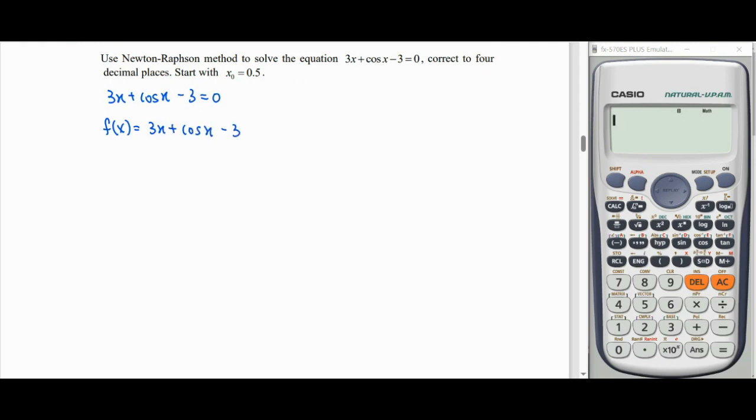In Newton-Raphson method, what we need here is a function and its differential function. So differentiate 3x, we get 3. Differentiate cos, we get negative sine. And differentiate 3, we get 0. So when we have f(x) and f'(x),